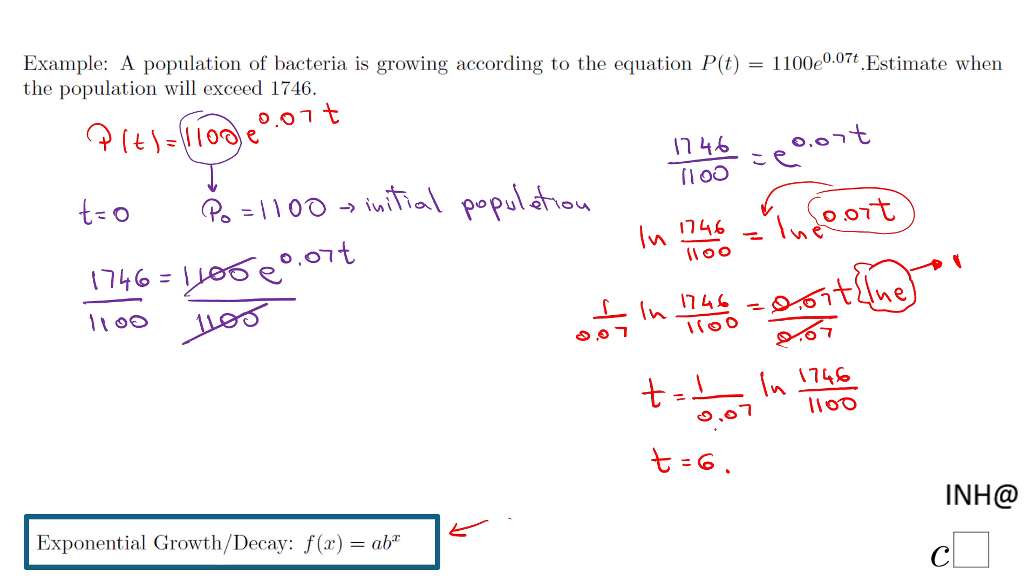Which means it's going to take 6.6 years for this population to grow from 1100 to 1746.